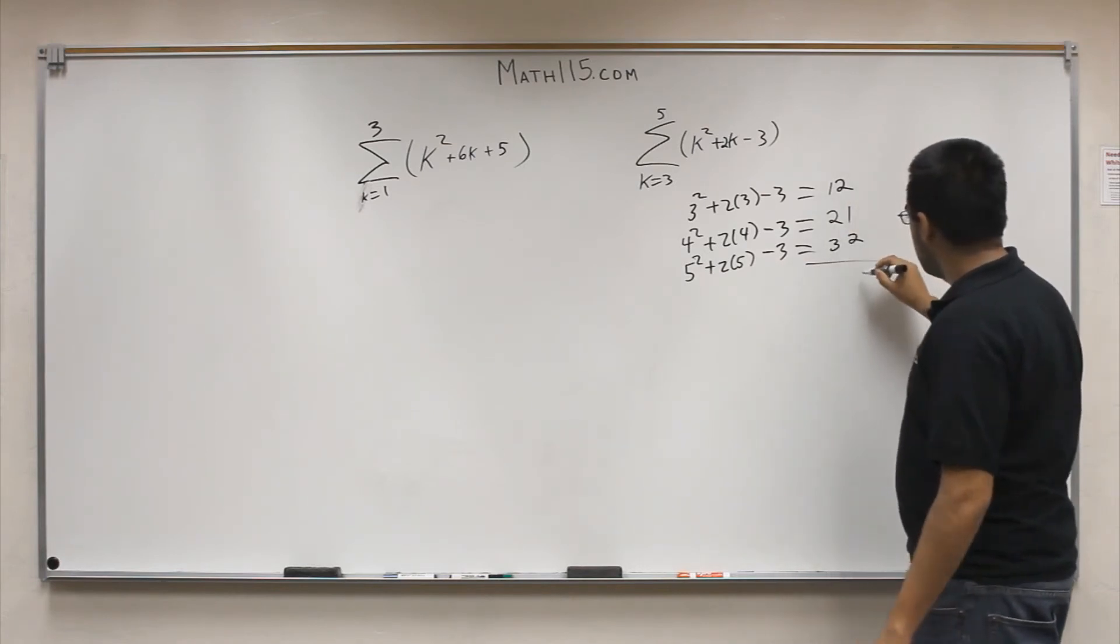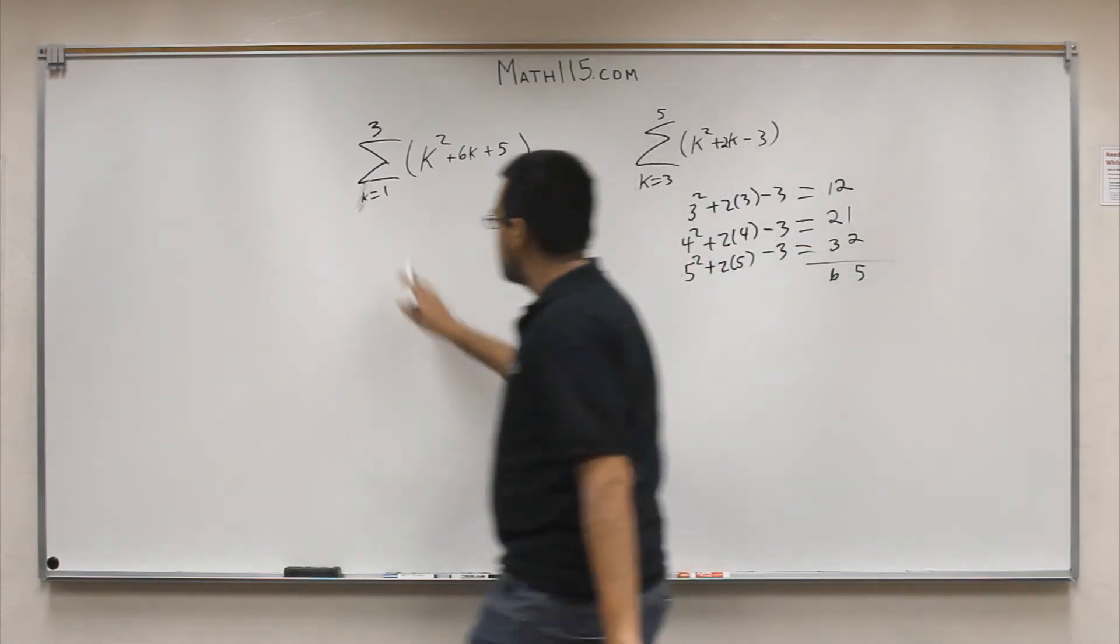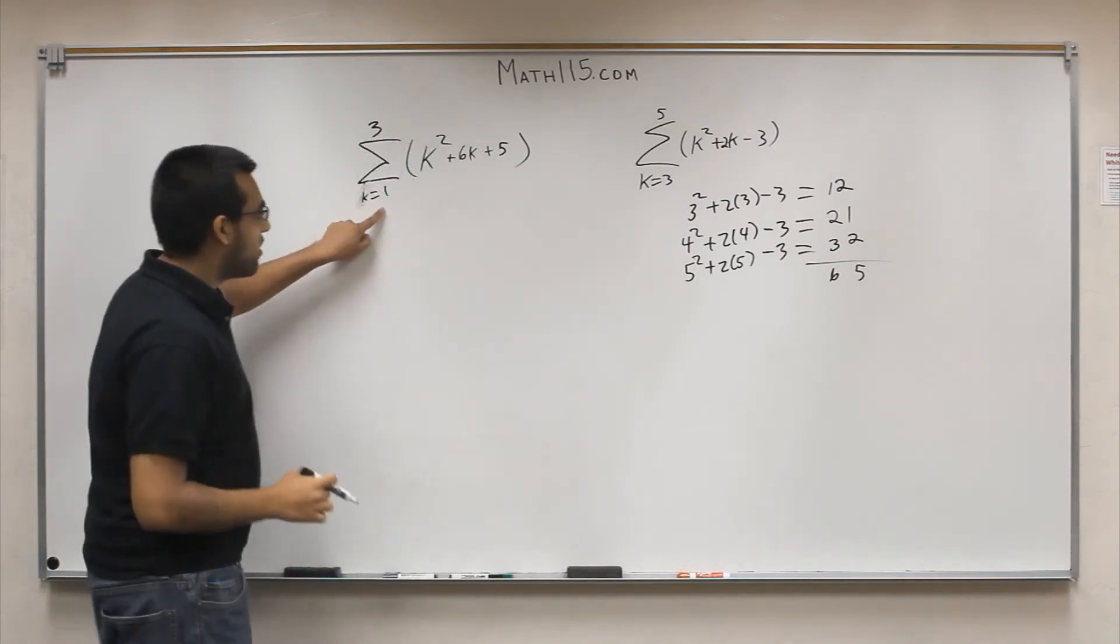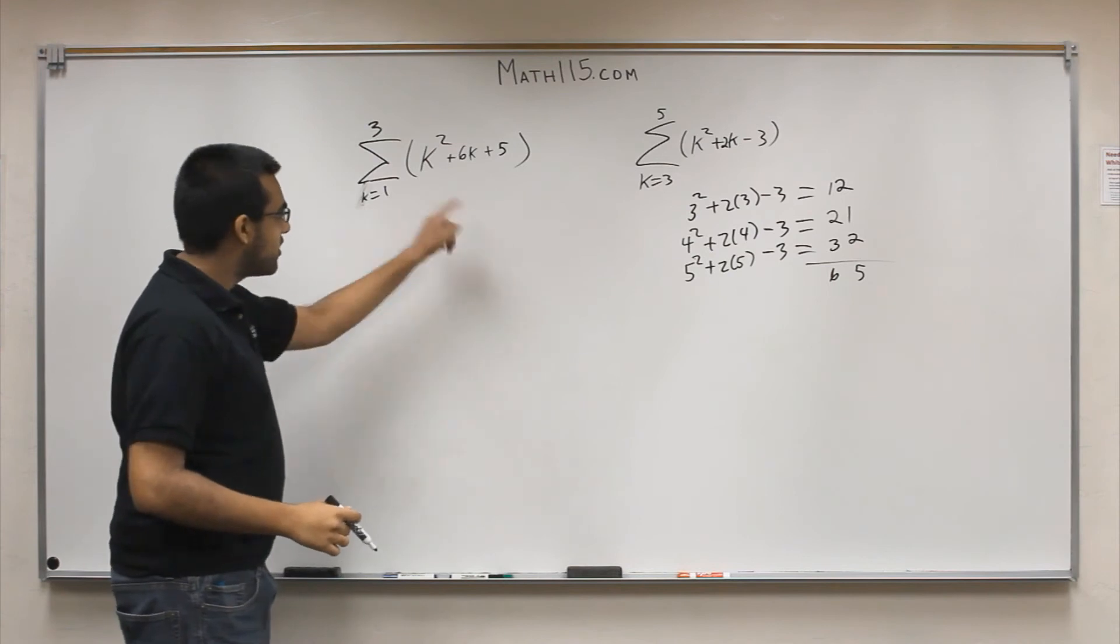So when you sum these together you get 65. So if we get 65 over here we should be good. So let's go ahead and try this out. So here our re-index is 1 to 3. So we're going to plug in 1, 2, and 3 into this equation.